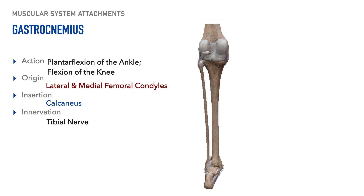The first muscle of the triceps surae is commonly referred to as the calf muscle but more appropriately referred to as the gastrocnemius. Its actions include plantar flexion of the ankle and flexion of the knee. Its origin is on both the lateral and medial femoral condyles, its insertion is on the calcaneus, and its innervation is the tibial nerve.